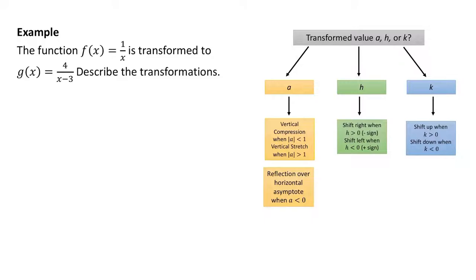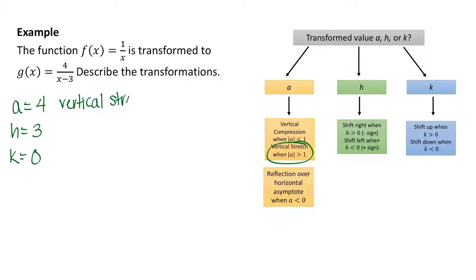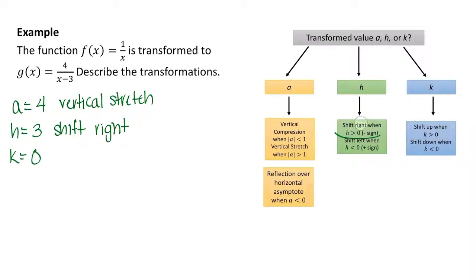Now let's try this example. We have g of x equals 4 over x minus 3. In this case, a equals 4, h equals 3, and k is not present, so we say k equals 0. a equals 4 is greater than 1, so that is a vertical stretch. h equals 3 gives us a minus sign, so that is a shift right. k equals 0 means no vertical change — k has to be greater than or less than 0 for a change.